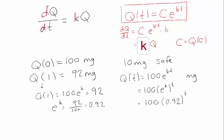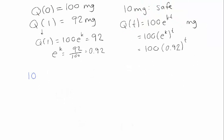So now all I have to do is set this equal to 10 and see what that gives me. So I set 100 times 0.92 to the t equal to 10, divide both sides by 100, 0.92 to the t is 1 over 10.